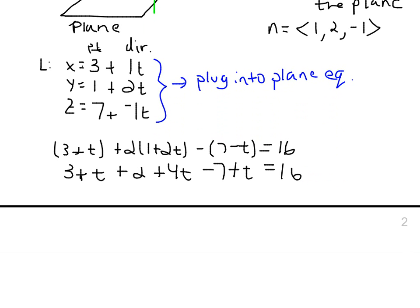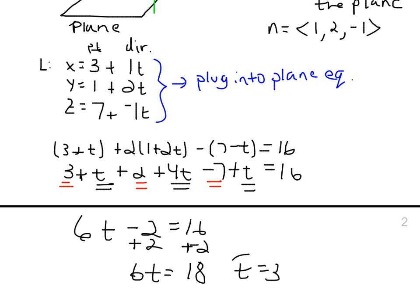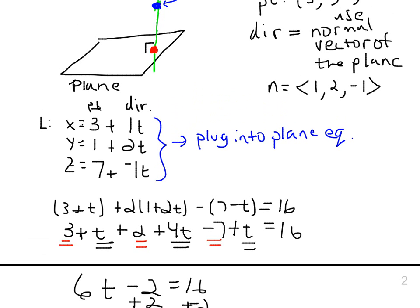How many t's do we have? Looks like 6 of those t's: 1, 4, and 1. What about the other numbers? 3, 2, and negative 7. 5 minus 7, that's negative 2, is equal to 16. Add the 2 over, you get 18. 6t is 18. At time t equals 3, the line and the plane will coincide.